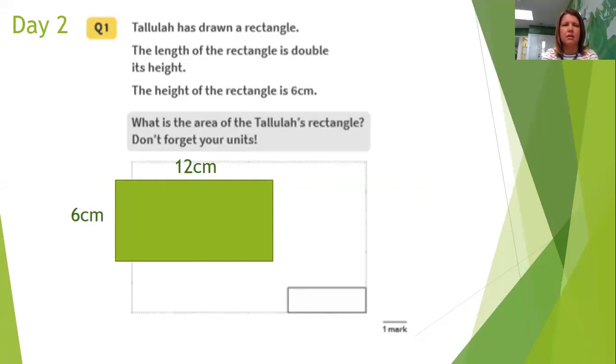What is the area of Tallulah's rectangle? So I know to work out the area, I multiply the length by the width. So I'm going to multiply 12 by 6. I don't need to do a calculation because I should know that that is 72. And it's saying, don't forget your units. Remember, because it's showing the area that it's covering, we are measuring in centimetres squared. So the answer is 72 centimetres squared.